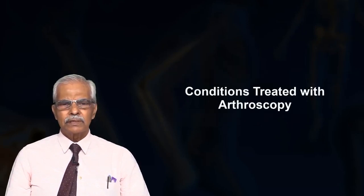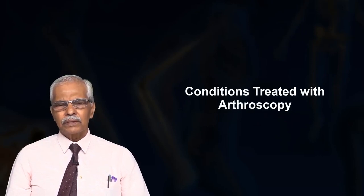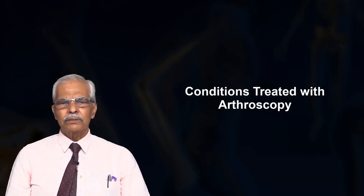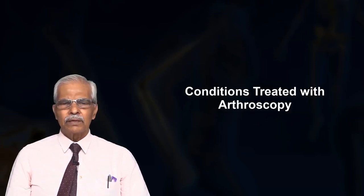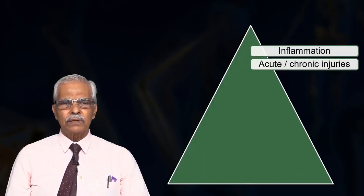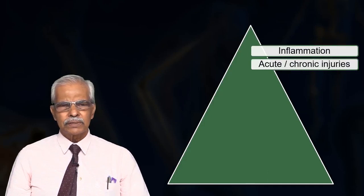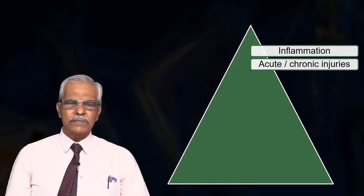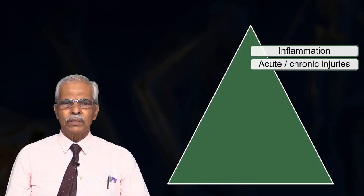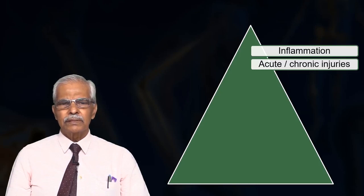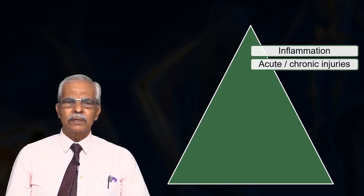What are the conditions treated with arthroscopy? To be short, anything where there is indication for surgery of closed cavities like knee and shoulder — the arthroscope comes into use and the surgery can be done without opening the joint. Indications include inflammation, acute and chronic injuries, conditions like tuberculosis or non-inflammatory conditions like rheumatoid arthritis where you don't know the diagnosis, and you can do synovectomy, loose body removal, and other conditions can be treated.